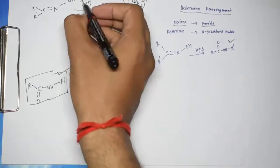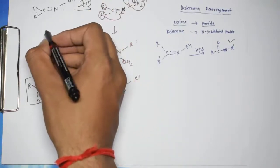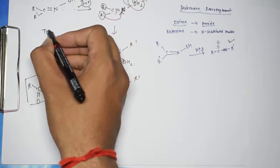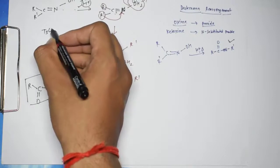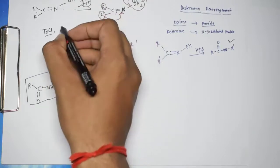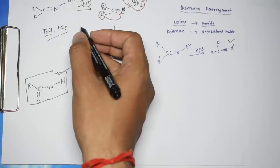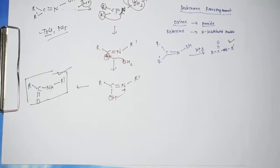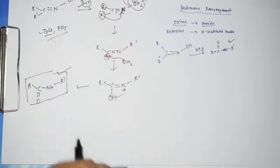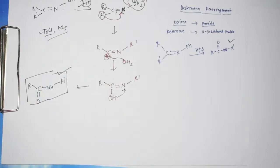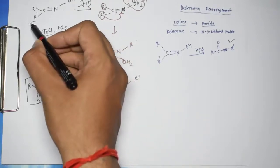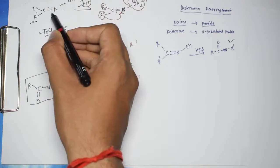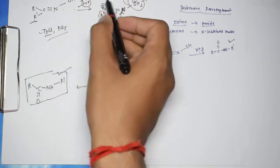Instead of H⁺, it has also been seen that tosyl chloride (TsCl) and PCl₅ also promote this reaction. Apart from TsCl and PCl₅, phosphorus pentachloride and phosphorus pentoxide also promote this reaction. So this is an acid-induced rearrangement of a ketoxime to an amide.